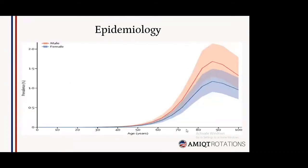Regarding gender epidemiology, there is a slightly higher ratio of males being diagnosed with Parkinson's as opposed to females. However, different studies in different populations across the globe have shown some variability in these statistics.